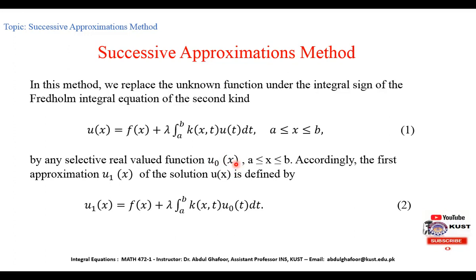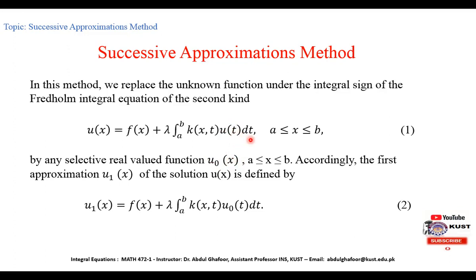Later on, I will tell you how to select this for simplicity. According to the first approximation, u1(x), or the first approximation of the solution u(x), is defined in equation 2. Equation 2 is obtained from equation 1 by replacing u(x) with u1(x) and u(t) with u0(t). Since t is a dummy variable, we select u0(x) but use it as a function of t, replacing x with t.